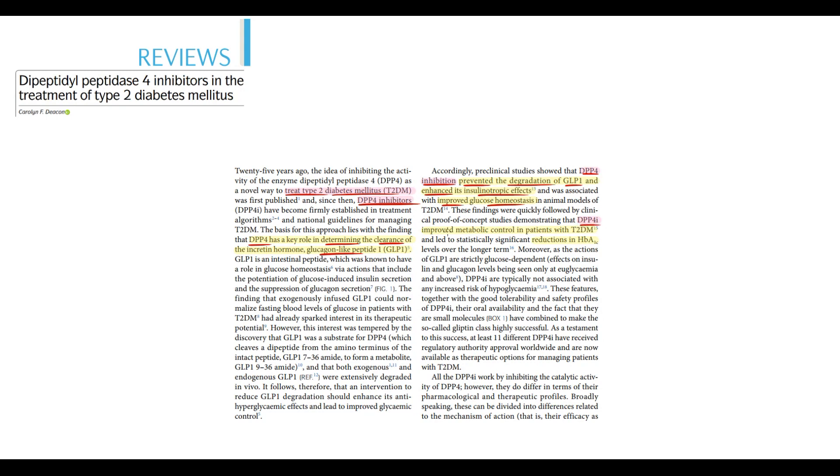The major reason why we use DPP inhibitors is to improve metabolic control in patients with diabetes type 2. In simple words, we use DPP inhibitors to lower blood glucose level, and this glucose-lowering effect we control by reduction in glycated hemoglobin. Knowing this, let's illustrate the mechanisms of action.